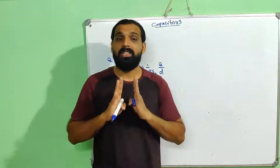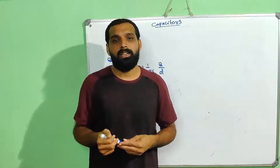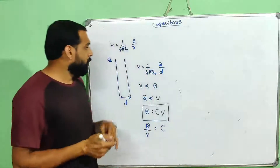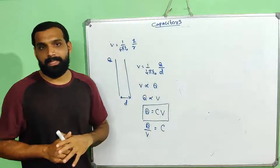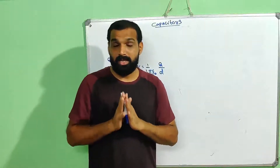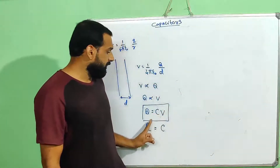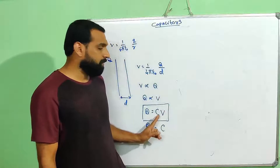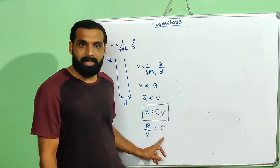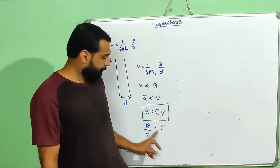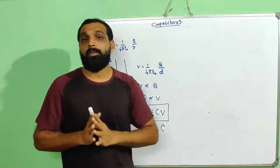Capacitance is an energy storage device — a charge storage device in which two conductors are separated by a small distance between them; that is a capacitor. The equation is Q equal to CV. Capacitance of a capacitor is given by Q by V, the ratio of charge and potential.